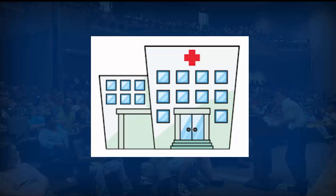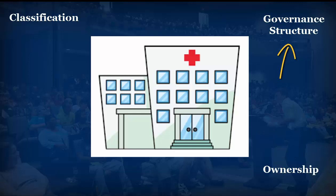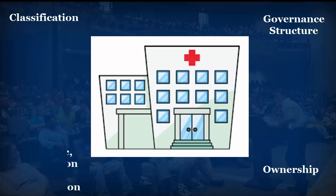There are four different ways we can look at the hospital structure overall. We can look at it from a classification standpoint — is it a level one trauma facility or a specialty hospital? We can look at it from an ownership standpoint — is it for-profit or non-for-profit? We can look at it from a governance standpoint — is it philanthropic, faith-based, or corporate? And the last way is by its licensure, certification, or accreditation — does it have Joint Commission accreditation, has it been surveyed by Malcolm Baldrige, or did it receive an award like the Tennessee Center for Performance Excellence?